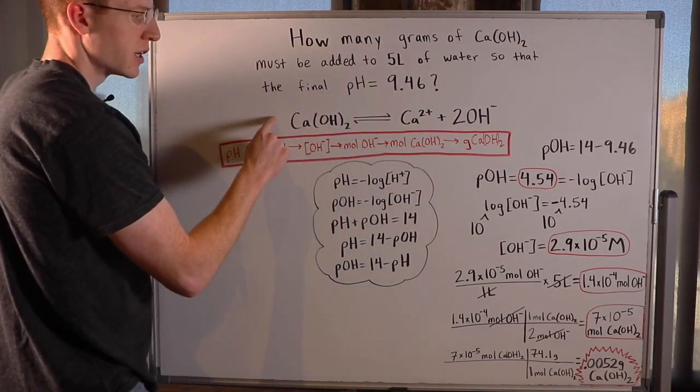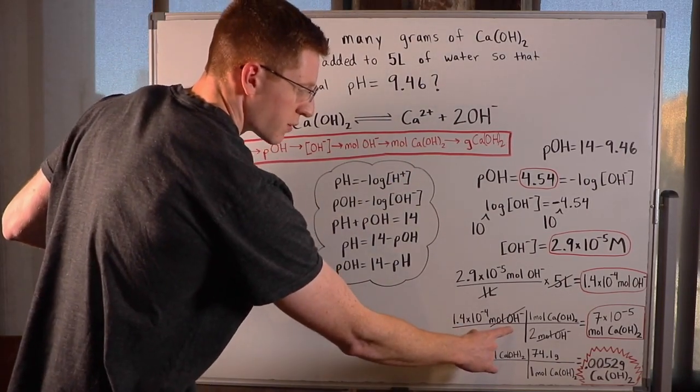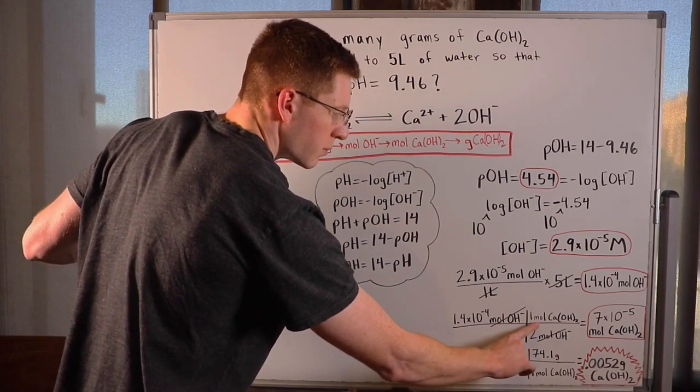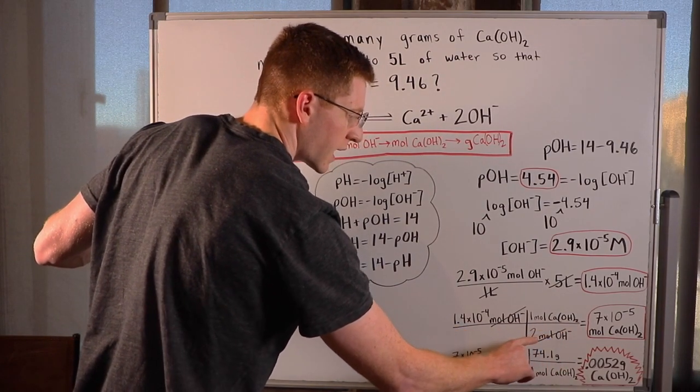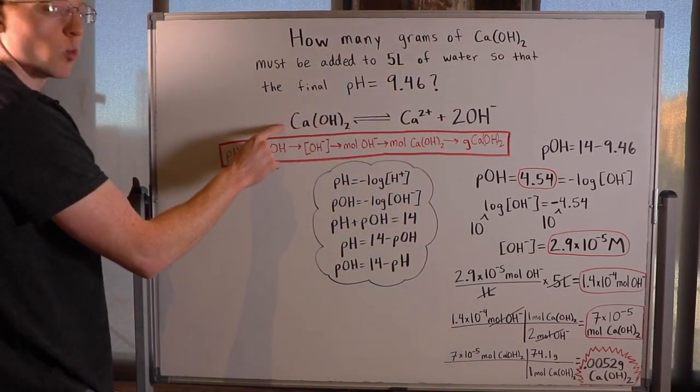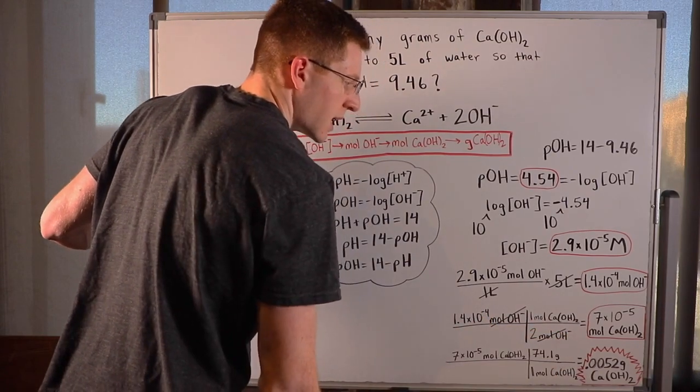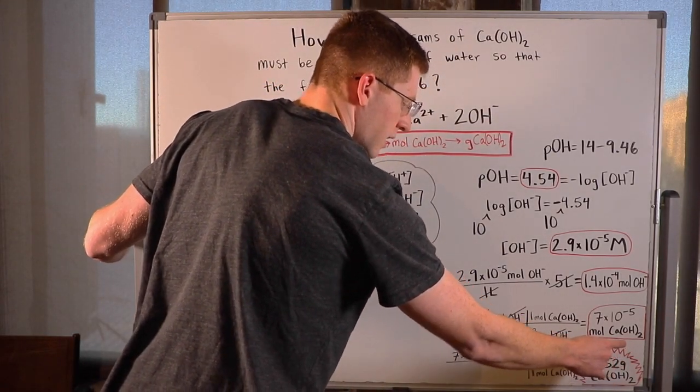Finally, I crossed my mole bridge to get to moles of calcium hydroxide. So here were the moles of hydroxide, and I knew that for every 1 mole of calcium hydroxide, I had 2 moles of hydroxide, because it's in a 2 to 1 molar ratio. So I found that I had 7 times 10 to the negative 5 moles of calcium hydroxide.